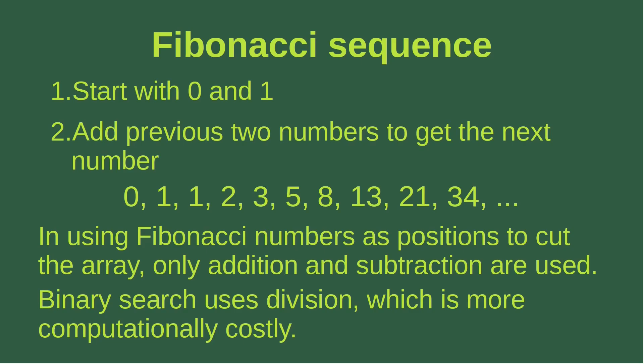The purpose of using Fibonacci numbers in a search process is that they allow us to determine the position of chopping the array by using only addition or subtraction. In binary search, we need division to find the middle index, but division is more computationally costly — it usually takes more steps than addition or subtraction. So Fibonacci numbers help us determine the position to chop the array in a more effective approach.